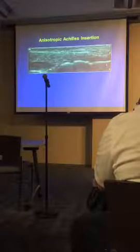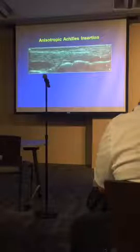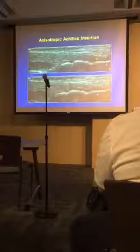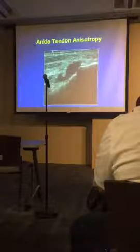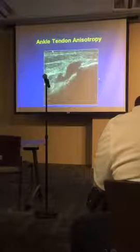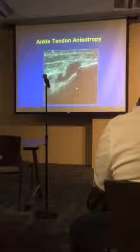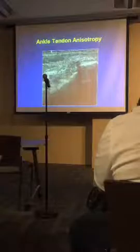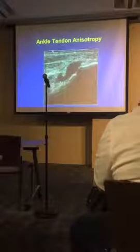For example, where the Achilles inserts onto the back of the calcaneus, the tendon curves down and an area may look dark. Rock the probe and you see a nice fibrillar pattern — no tendinosis or pathology there. Anisotropy also occurs in transverse views: a student might see hypoechoic areas at the medial ankle and think they're thrombosed veins, but rocking the probe reveals the brush pattern typical of tendons — the posterior tibial and flexor digitorum longus tendons were simply anisotropic.